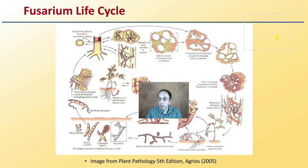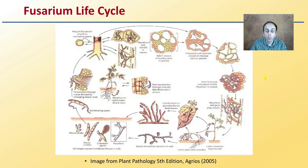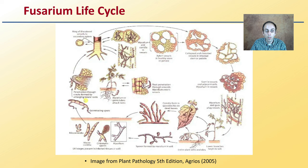Now, the general life cycle of fusarium — it's important to understand the life cycle because where you can break or interrupt it might be a way to reduce severity. Those germinating spores penetrate the lateral roots, causing them to proliferate and get into the internal structure of the plant. Wound areas encourage that. The disease gets into the vesicles of the plant, particularly the xylem, which is the water-transporting vesicles of the plant.